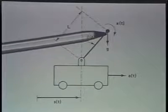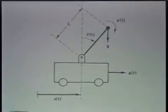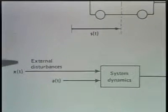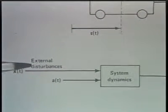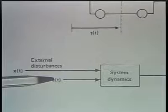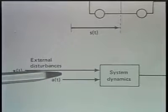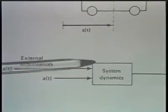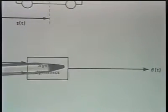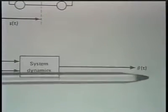Looking at the system, we have two inputs: the external disturbances, which we have no control over, and the acceleration applied to the cart externally — or, in the case of balancing my son's horse, the movement of my hand. Through the system dynamics, that ends up influencing the angle of the rod, which we'll think of as the system output.